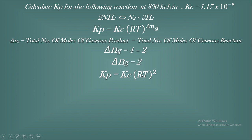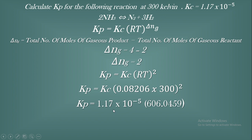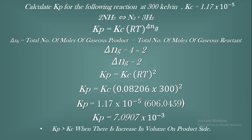Now substituting ΔnG = 2 into the formula: Kp = Kc × (RT)^2. With R = 0.08206 and T = 300 K, we calculate (RT)² and multiply by the given Kc value. The resulting Kp value comes out to approximately 7.090 × 10⁻³, while Kc was × 10⁻⁵. Since 10⁻³ is larger than 10⁻⁵, Kp is greater than Kc — proving that Kp > Kc when there is an increase in volume on the product side.